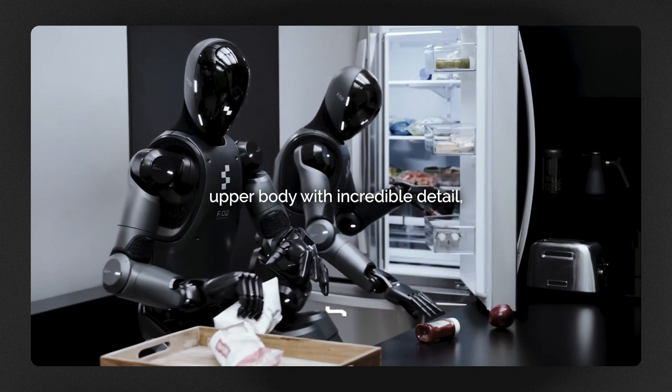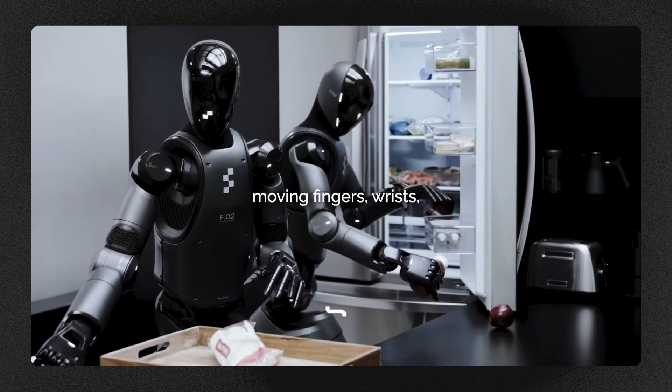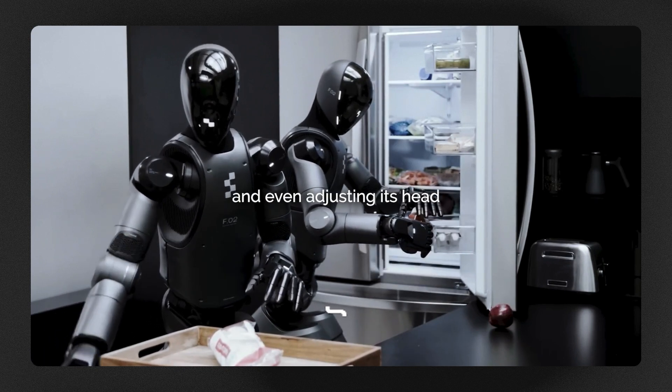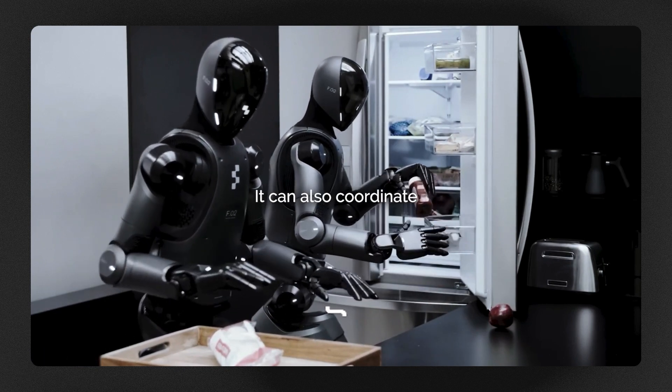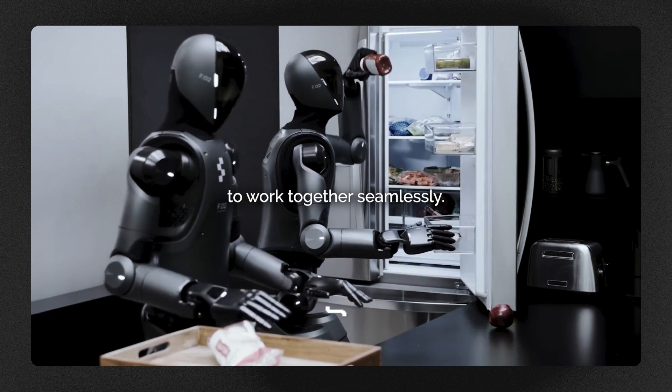Helix can control a robot's upper body with incredible detail, moving fingers, wrists, and even adjusting its head and torso. It can also coordinate multiple robots to work together seamlessly.